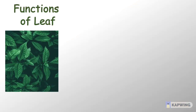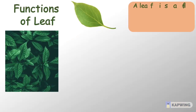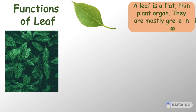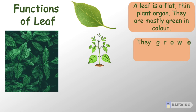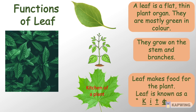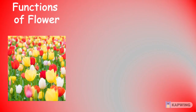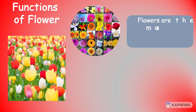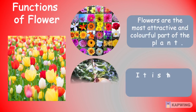Next comes the leaf. A leaf is a flat, thin plant organ. Leaves are mostly green in color and they grow on the stem and branches. The leaf makes food for the plant — that is why it is known as the kitchen of the plant.